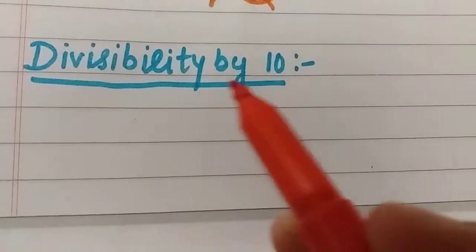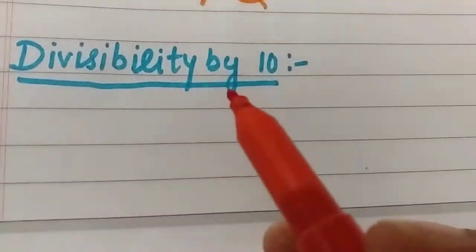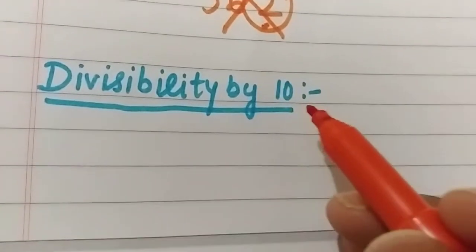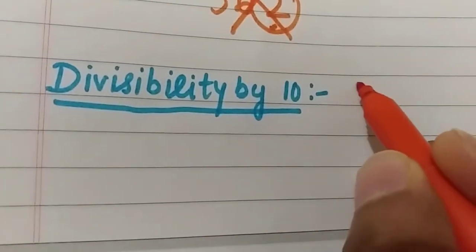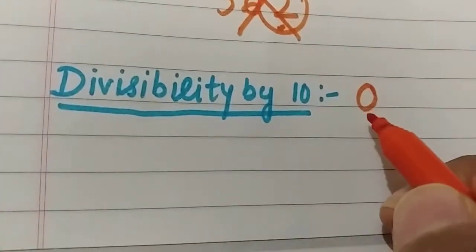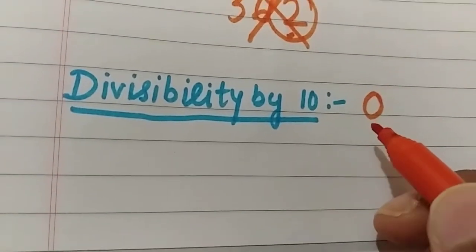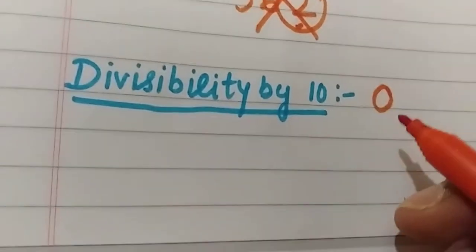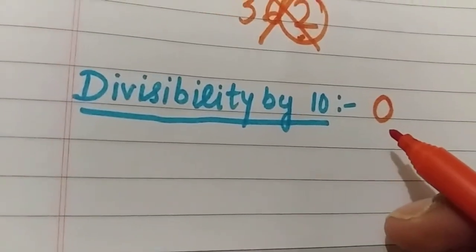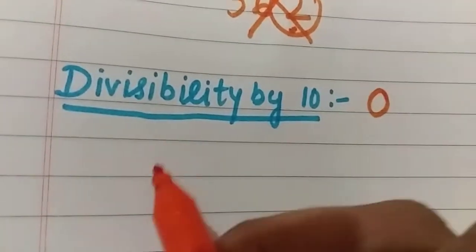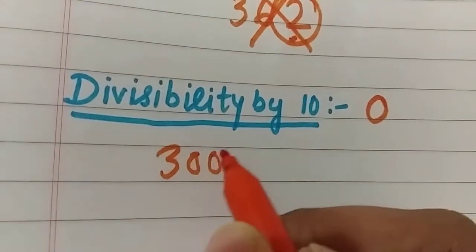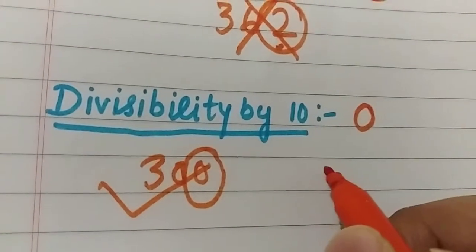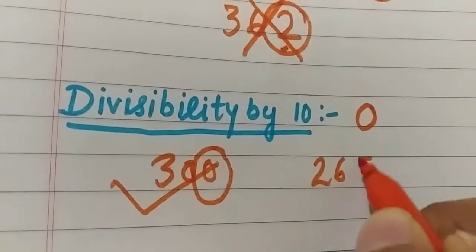Last is divisibility by 10. A number is divisible by 10 when its ones place digit is 0. For example, 100 is divisible by 10 because its ones digit is 0.